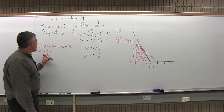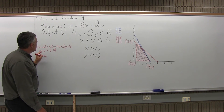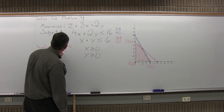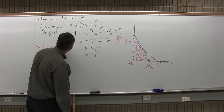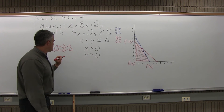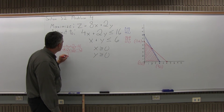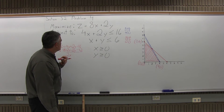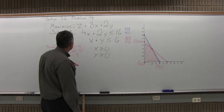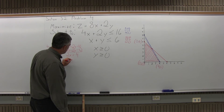I could go with 4x and negative 4x, or 2y and negative 2y — you get the same answer either way. The y's are probably easier to deal with. So I'll take the top equation and leave it the same: 4x plus 2y equals 16. The bottom equation, everything gets multiplied by negative 2. Negative 2 times x is negative 2x, negative 2 times y is negative 2y, and negative 2 times 6 is negative 12.